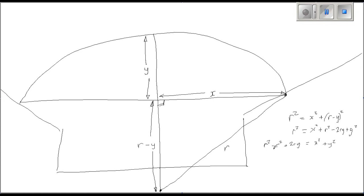So now we can eliminate the R squareds here, and we're left with 2RY equals X squared plus Y squared.